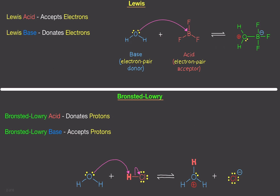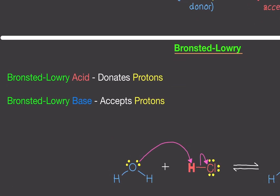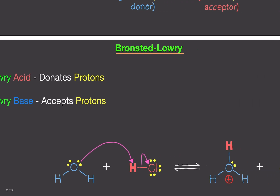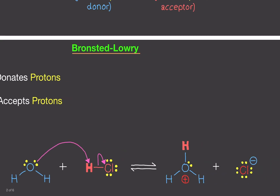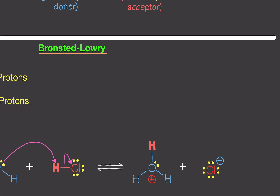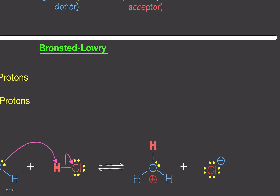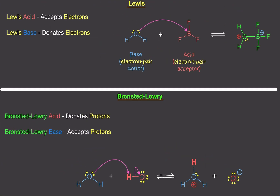Here are the two mechanisms. Bronsted and Lowry said the acid donates a proton and the base accepts the proton. The lone pair of the base goes after the proton of the acid, and the acid willingly gives up the proton. We form two different molecules — the conjugate base and the conjugate acid. If you need a refresher, please watch my Bronsted and Lowry video.